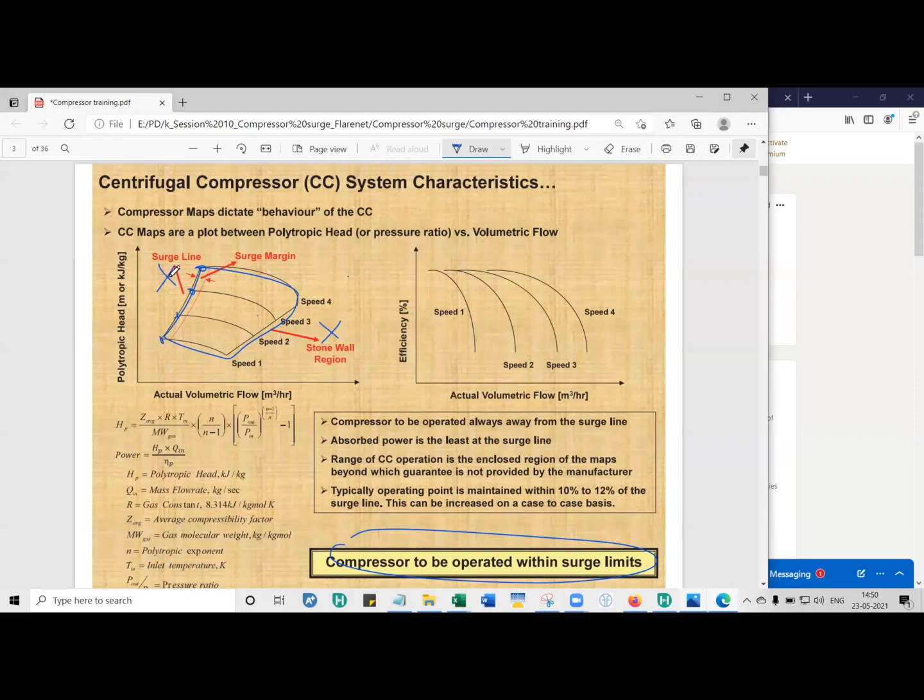Operating into the surge line region. So what we do is, let me just erase it first. What we do is we maintain a certain margin here. This is called SLL, surge limit line. So the surge limit line is the point at which the anti-surge system will kick in.